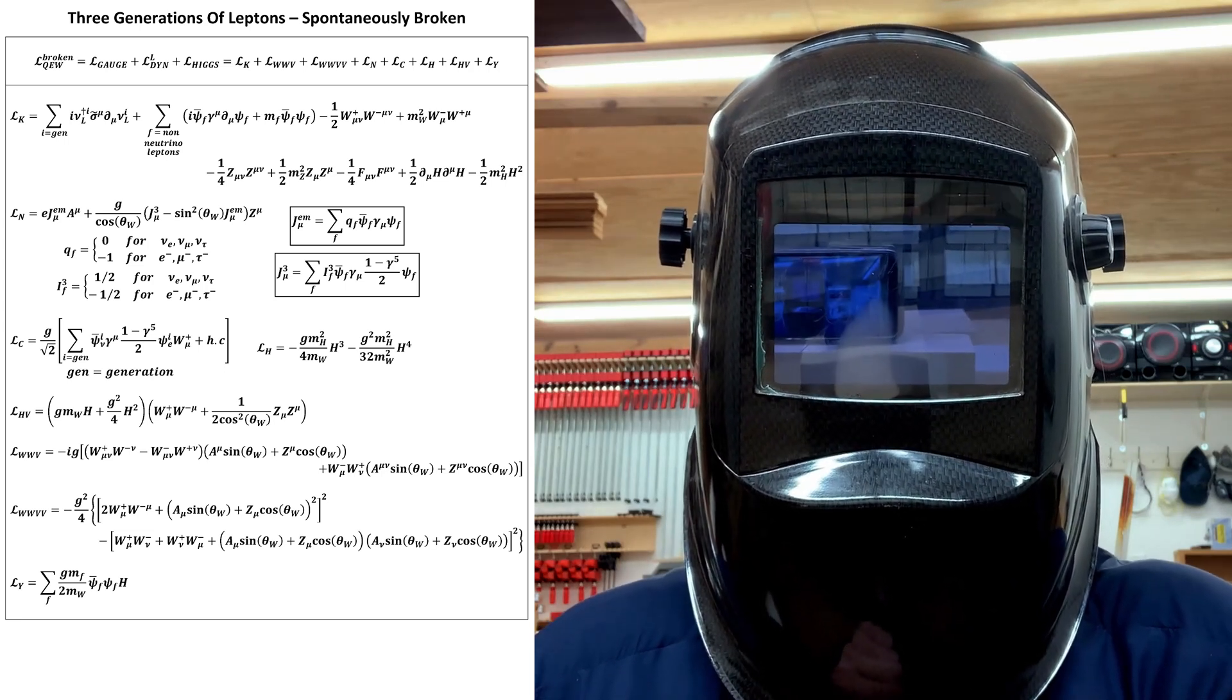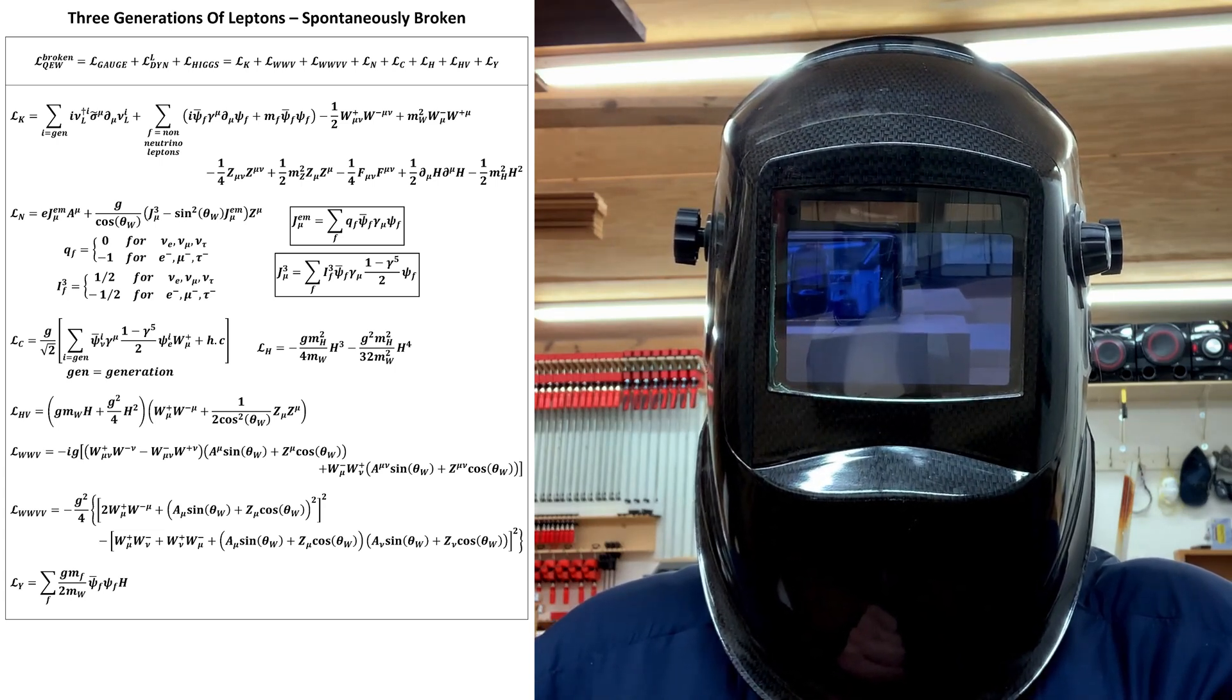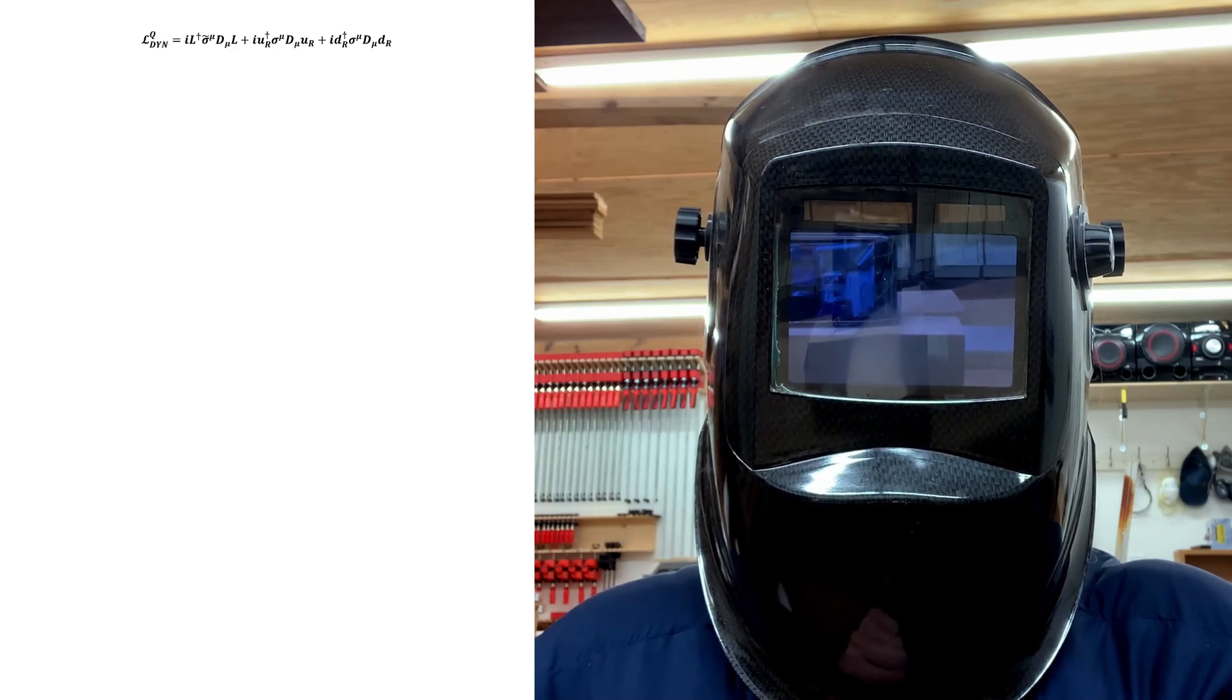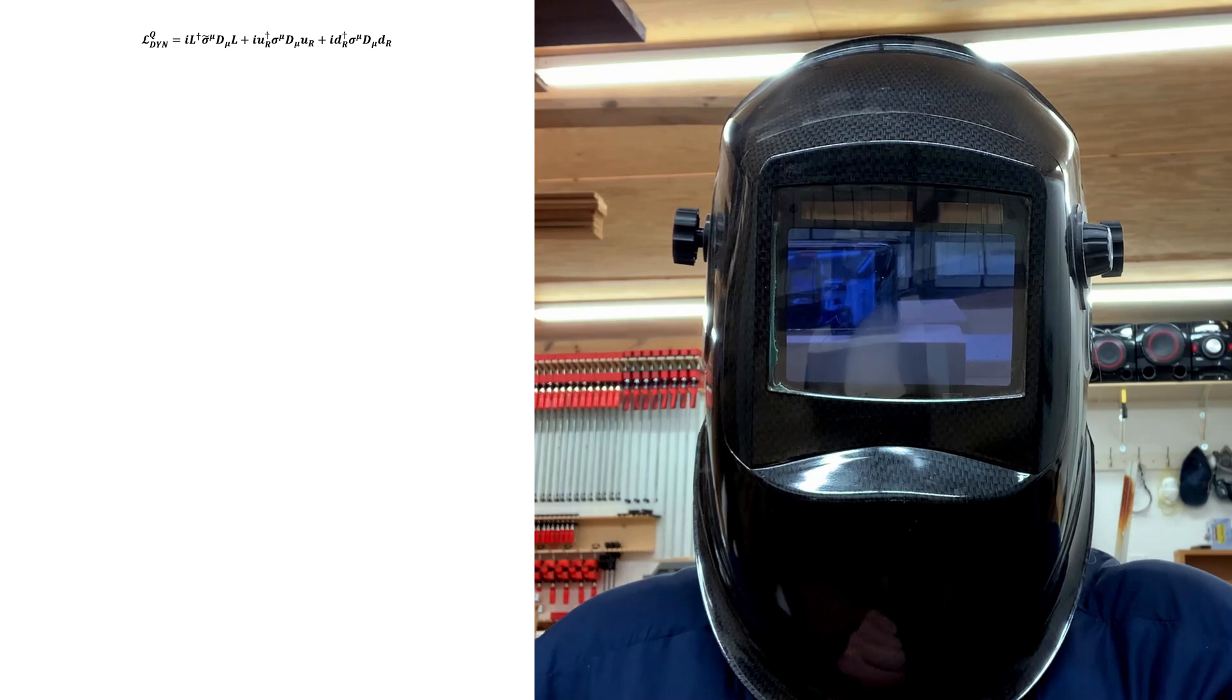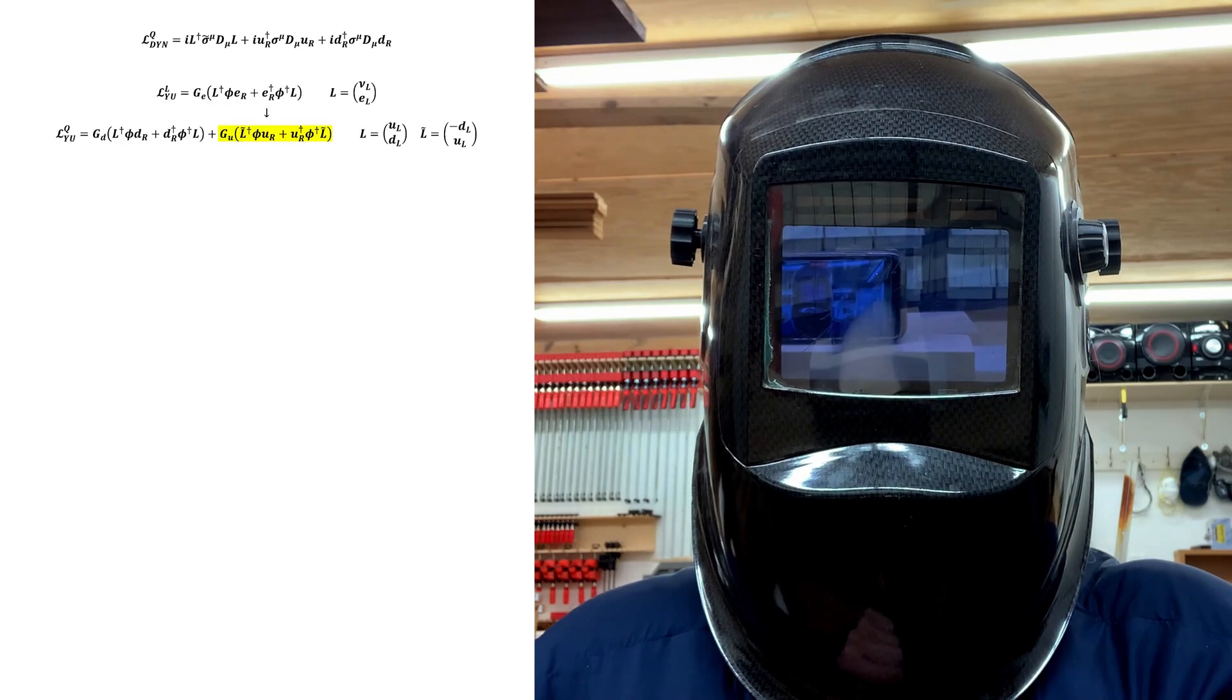So that massive Dirac spinors for both particles can form in the spontaneously broken theory. That leaves us with this fermion kinetic term. And as far as the Yukawa coupling term goes, we need to add to what the lepton theory had such that it gives masses to both particles. The standard way of doing this is to include this extra term.